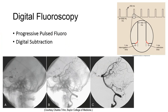With digital fluoroscopy, the individual image frames allow image subtraction techniques to be used, which can be extremely advantageous for exams using intravenous contrast media injection. The exposure time for each pulse, called the pulse width, can be adjusted from 3 to 10 milliseconds. Combining this feature with a standard MA station, the dose can be significantly reduced.